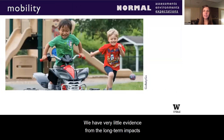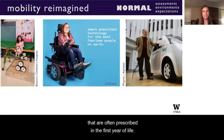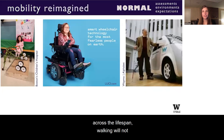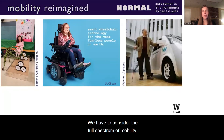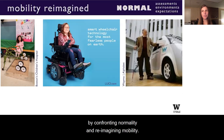We need to consider how devices and interventions can support development and avoid detrimental effects induced by assumptions of normalcy. We have very little evidence of the long-term impacts of walking-centered interventions like AFOs or walkers that are often prescribed in the first years of life. If our goal is fully participatory mobility across the lifespan, walking will not meet the needs of most people. We have to consider the full spectrum of mobility, from bespoke solutions to smart technology that can overcome environmental barriers. I'm optimistic and see amazing opportunities by confronting normalcy and reimagining mobility.